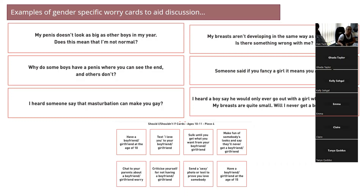There's also a 'Should I, shouldn't I?' activity which questions morality — for example, having a boyfriend or girlfriend at the age of 10. That is really discussion-provoking as well.